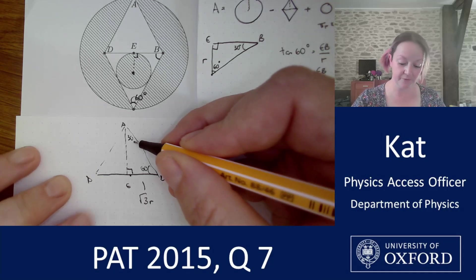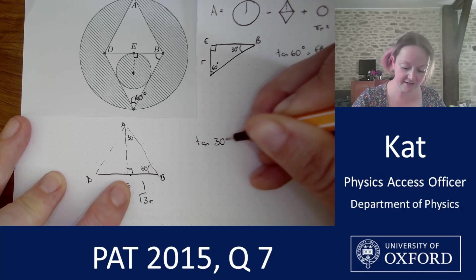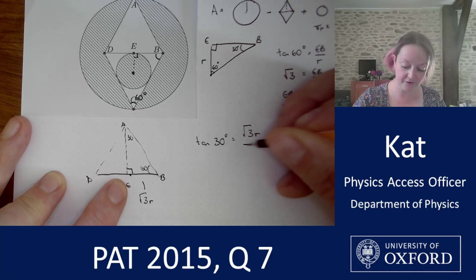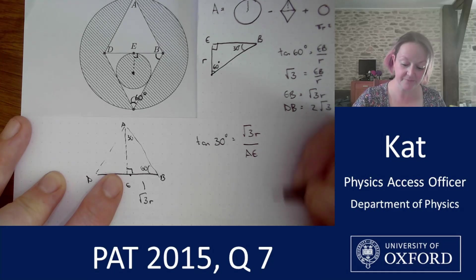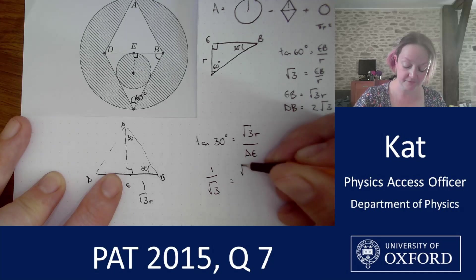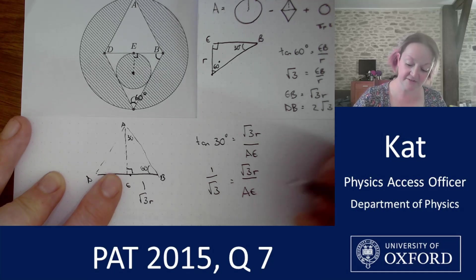So if I come in with tan 30, let's go from the top, why not? Change something else. So tan 30 is my opposite root 3R over my adjacent, which is my perpendicular height AE. I know that tan 30 is 1 over root 3. It's going to give me root 3R over my perpendicular height. So AE is 3R.